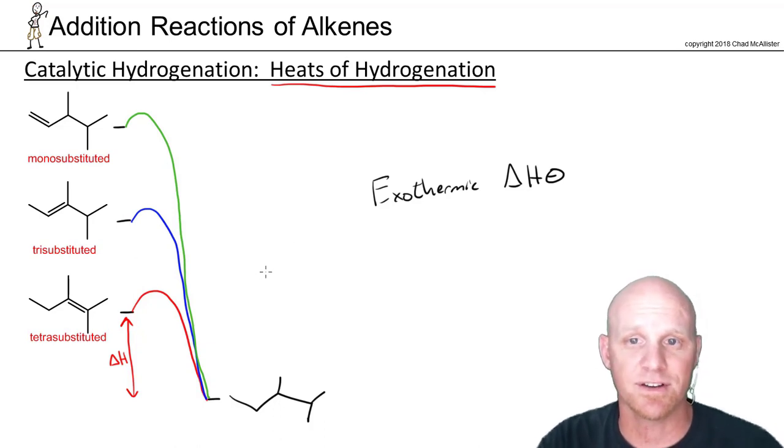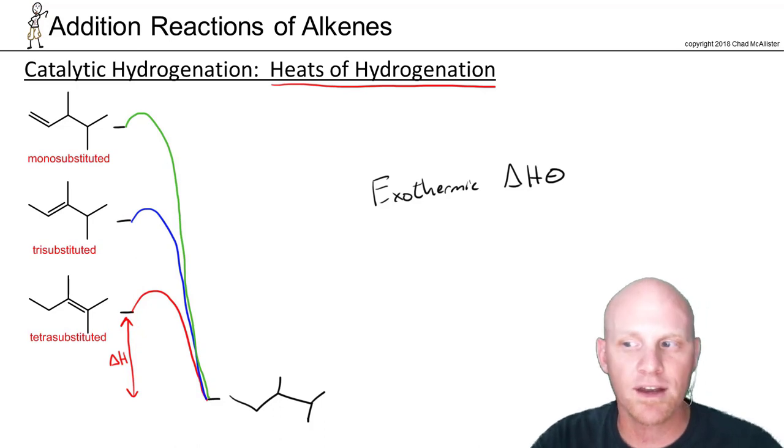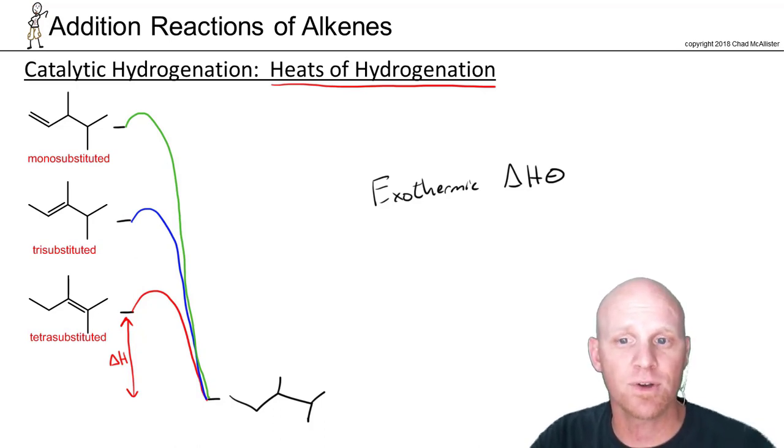So sometimes we have to rank the heats of hydrogenation. They're all negative. We always know they're all negative. So when we say the highest heat of hydrogenation, we want the one that releases the most heat, it's most exothermic. Generally, the least stable, which is generally the least substituted alkene, has the highest heat of hydrogenation, highest meaning most negative. So that's something you should be prepared, kind of a ranking you should be prepared to do.